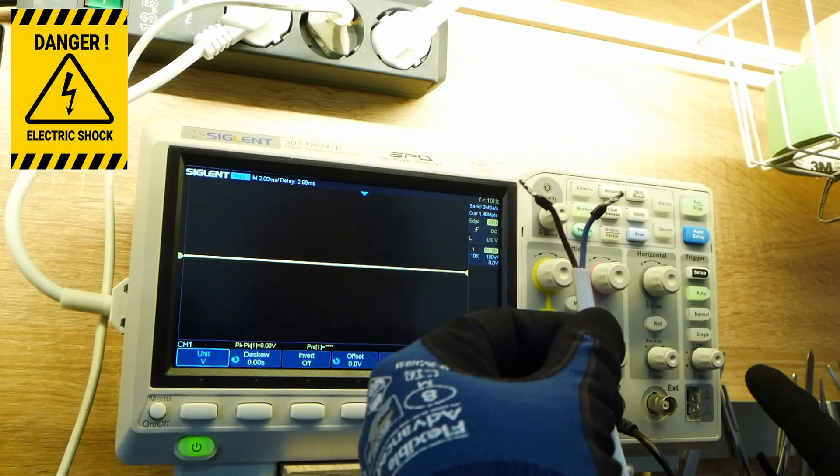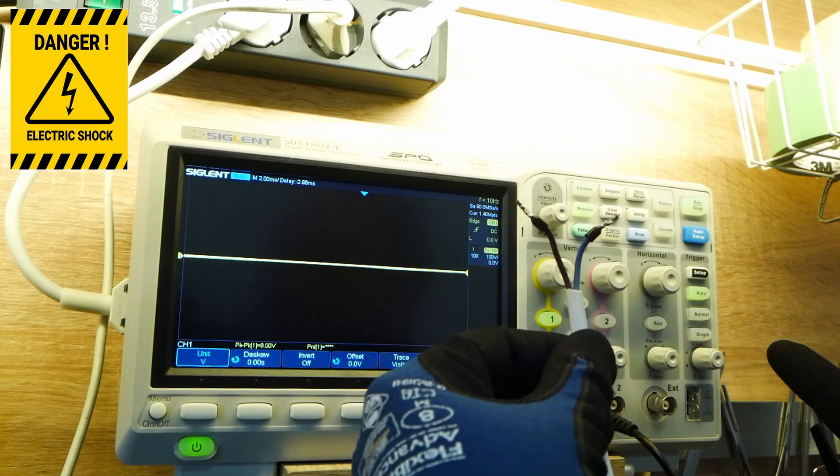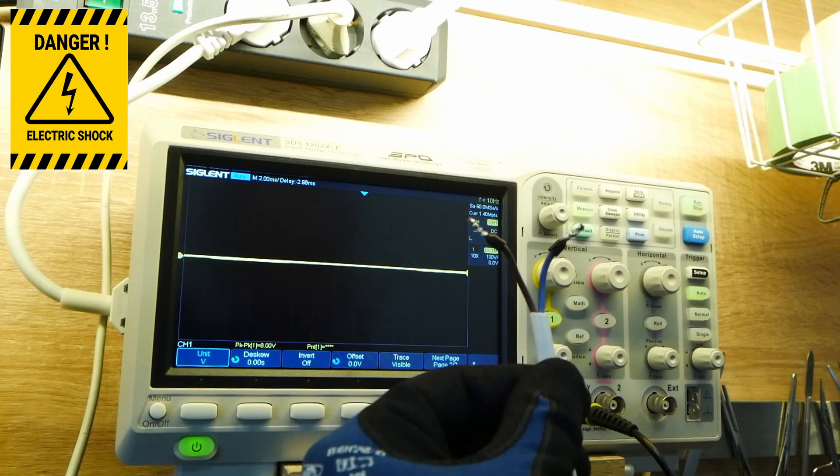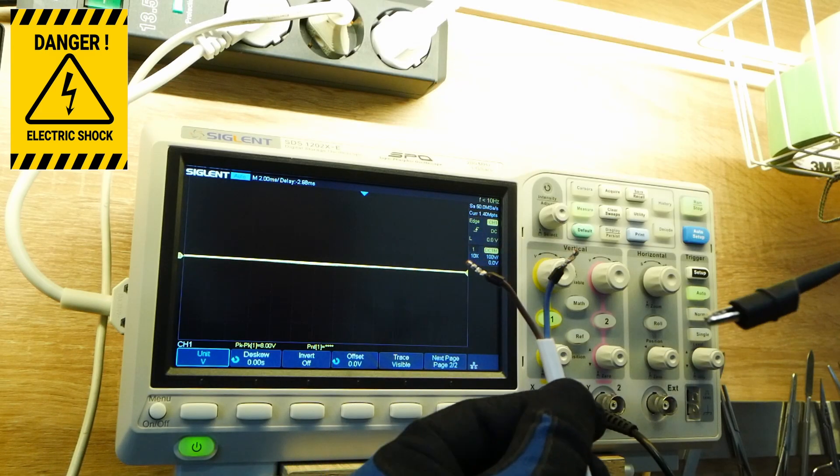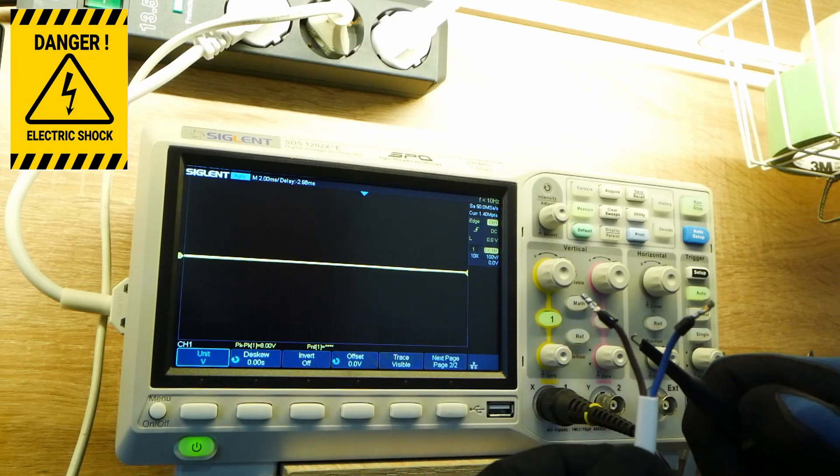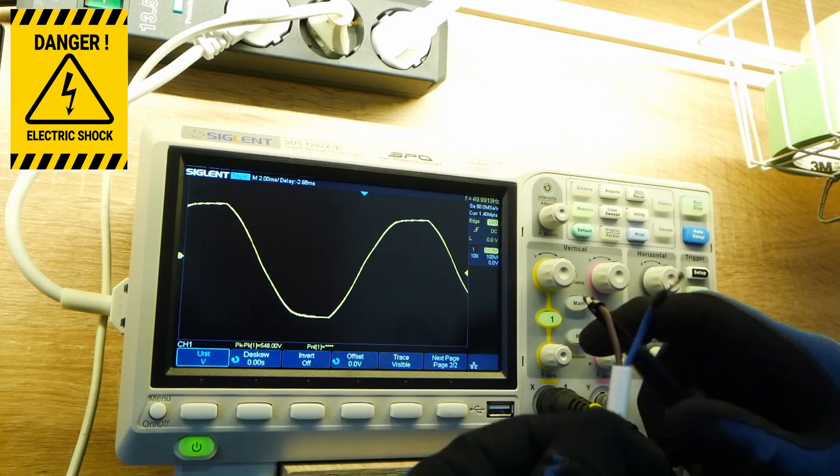Okay, so let's remember here I have a TN-C-S system, so actually my ground in the far electrical cabinet is connected to neutral.